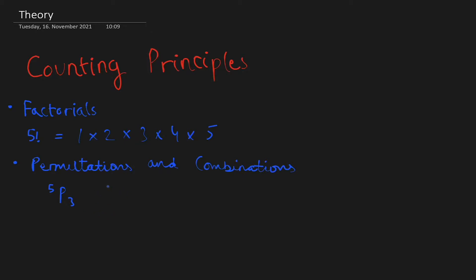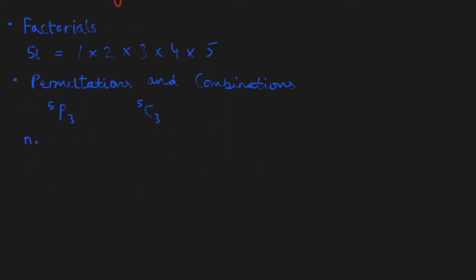Combinations are basically just permutations except the order in which the elements are selected is not necessary. Now I will show you how you can calculate the number of permutations and combinations. The formula for nPr is n factorial over n minus r factorial, and the formula for nCr is n factorial over n minus r factorial times r factorial.